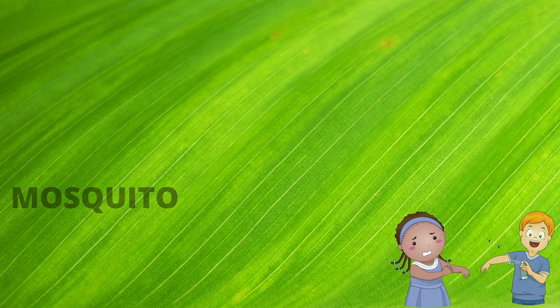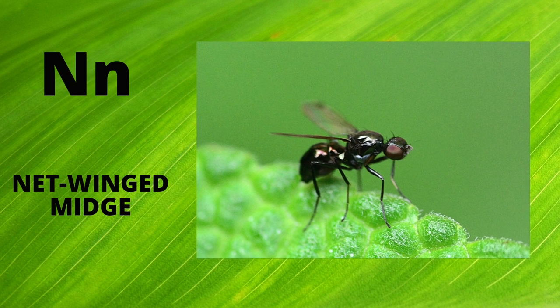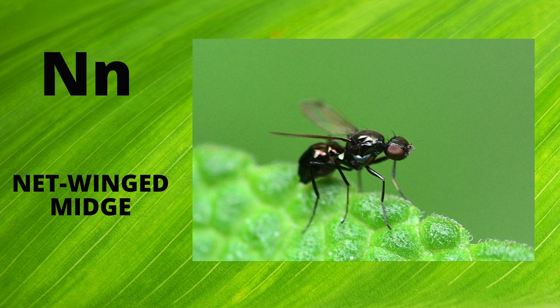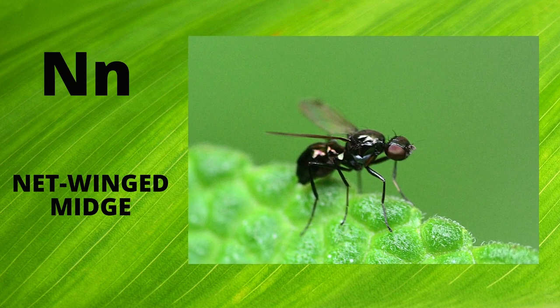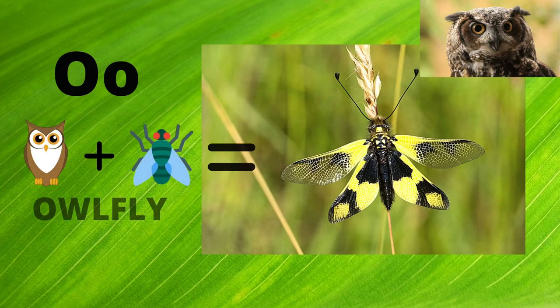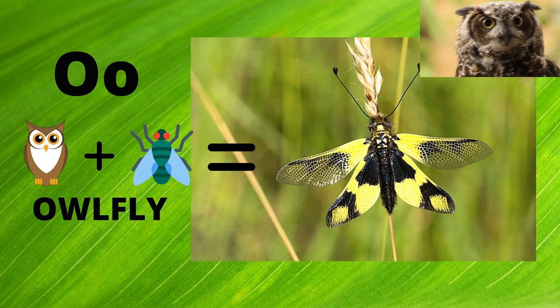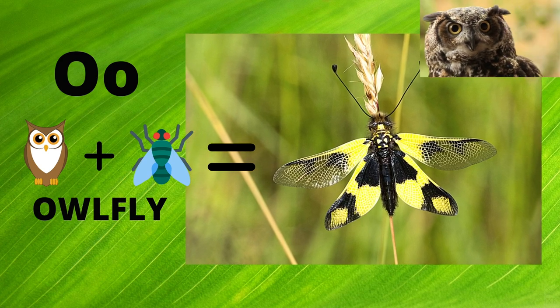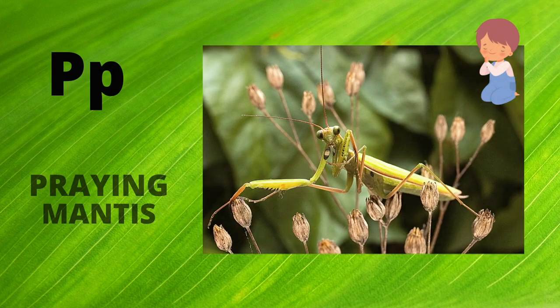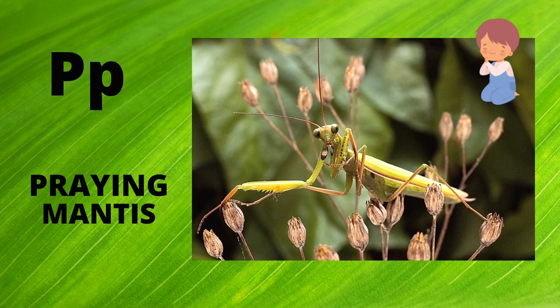N is for Netwing Midge. N. Netwing Midge. O is for Owlfly. O. Owlfly. P is for Brain Mantis. P. Brain Mantis.